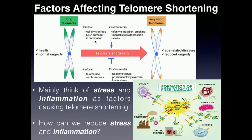Inflammation and DNA damage are somewhat intertwined. It is also established that mental states such as stress and anxiety can shorten your telomeres, which is another reason to de-stress at the end of the day. When we think of telomere shortening, the main two factors — because most things fall within these in some way — are stress and inflammation.